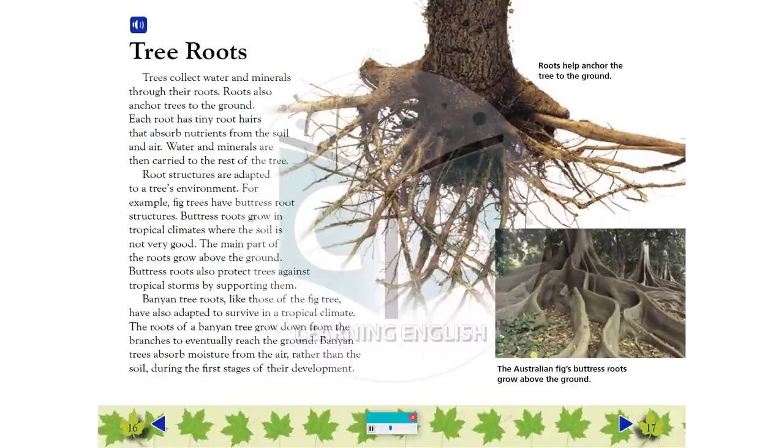Root structures are adapted to a tree's environment. For example, fig trees have buttress root structures. Buttress roots grow in tropical climates where the soil is not very good. The main part of the roots grow above the ground. Buttress roots also protect trees against tropical storms by supporting them.